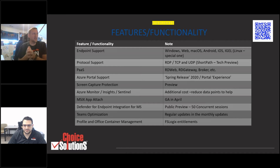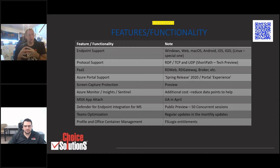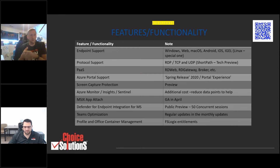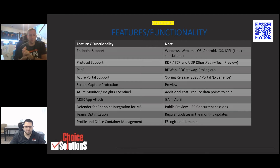I'm just highlighting a few features and functionality — we can't cover everything, we'd need three hours. One that comes to mind is endpoint support. If you were in the early days of WVD, they had hardly anything. Now they're pretty good: Windows, Web, Mac OS, Android, iOS, and they work with thin client manufacturers like IGEL for the Linux piece. On protocol support, it's RDP, basically TCP.